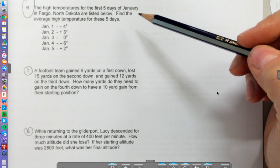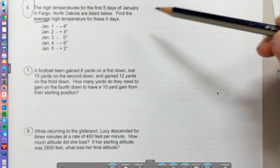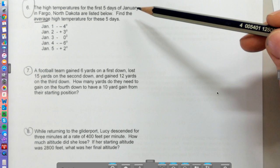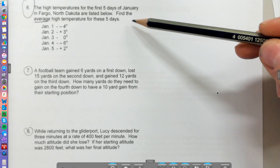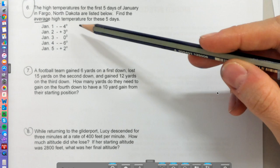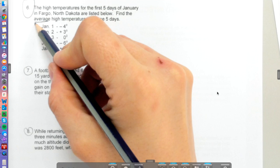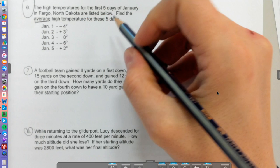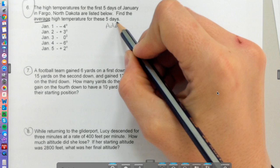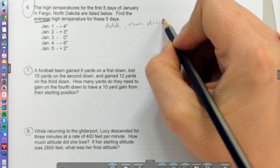I included this one because it talks about finding an average and you need to know how to do that. The high temperatures for the first five days of January in Fargo, North Dakota are listed below. Find the average high temperature for these days. Wow, Fargo, North Dakota is pretty cold. When we find an average, we need to add them all up.